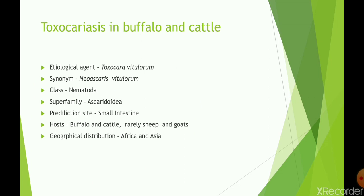The etiological or causative agent is Toxocara vitulorum. The synonym is Neoascaris vitulorum. It belongs to the class Nematoda and superfamily Ascaridoidea. The predilection site of this parasite is the small intestine, and the principal host is the buffalo, followed by cattle. It rarely affects sheep and goats. The geographical distribution is Africa and Asia.